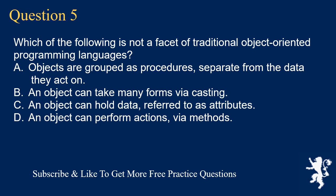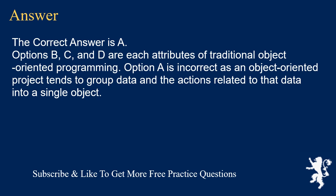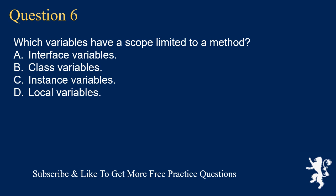Question 5: Which of the following is not a facet of traditional object-oriented programming languages? A) Objects are grouped as procedures separate from the data they act on. B) An object can take many forms via casting. C) An object can hold data referred to as attributes. D) An object can perform actions via methods. The correct answer is A. Options B, C, and D are each attributes of traditional object-oriented programming. Option A is incorrect as object-oriented projects tend to group data and actions related to that data into a single object.